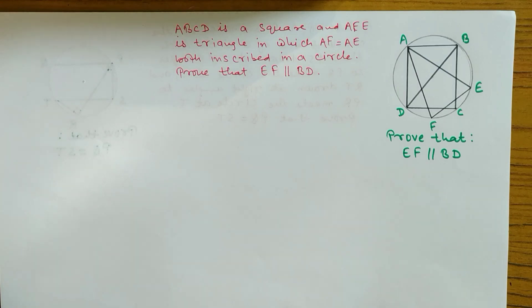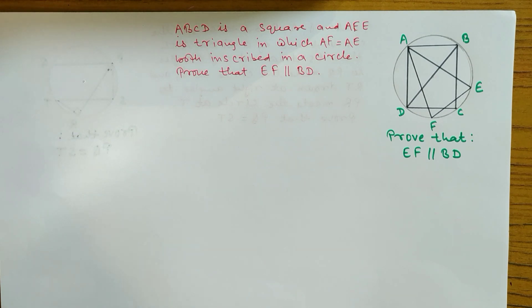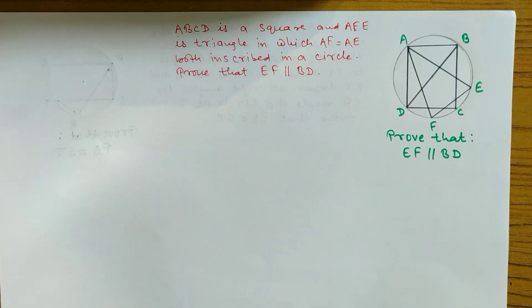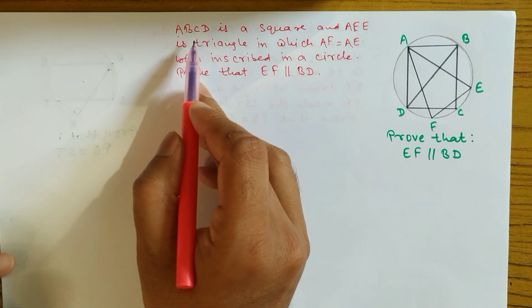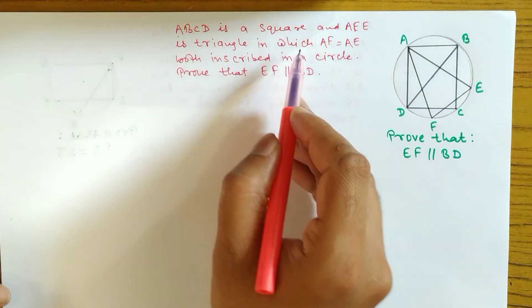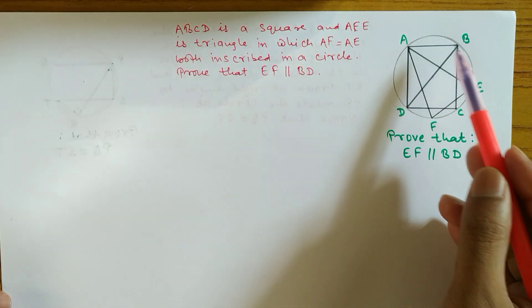Hello everyone, welcome to my YouTube channel. Today we have a question from circle theorems, also known as an unseen theorem, which is repeated most often in exams. You can score four to five marks on this type of question. ABCD is a square — you can see this diagram.